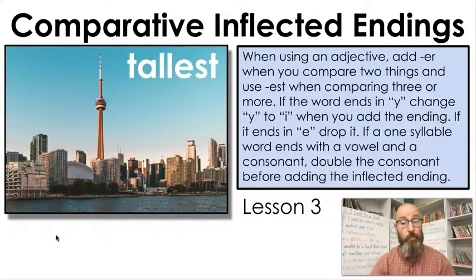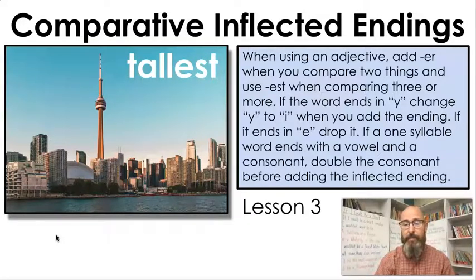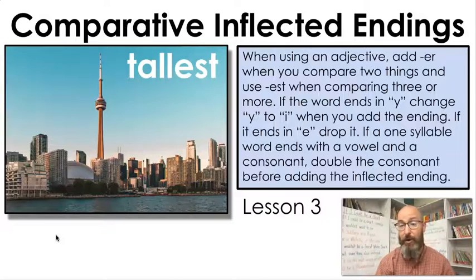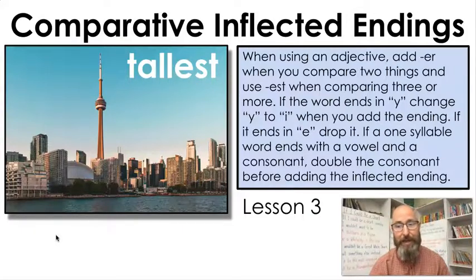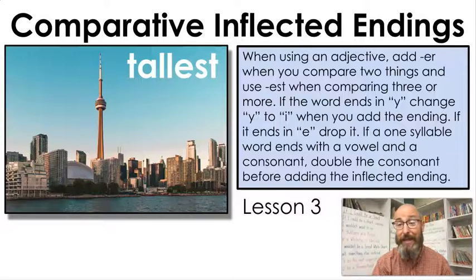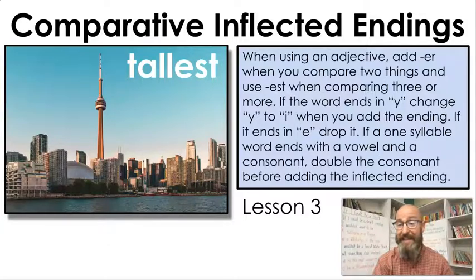Now let's get to our comparative and superlative endings. When you use an adjective — a describing word — you add '-er' when you compare two things, and you add '-est' if you're comparing three or more. If the word ends with a Y, you change that Y to I and then add the ending. If it ends with an E, you drop the E and add '-er' or '-est.' If it's a one-syllable word ending with a vowel and a consonant, you double that consonant before adding the inflected ending.